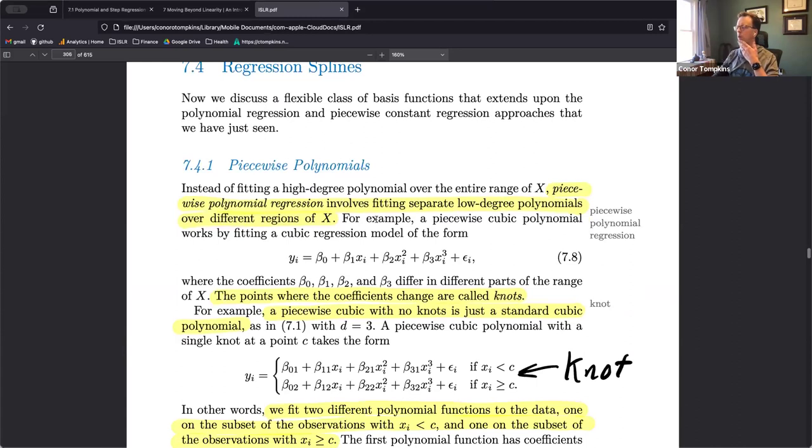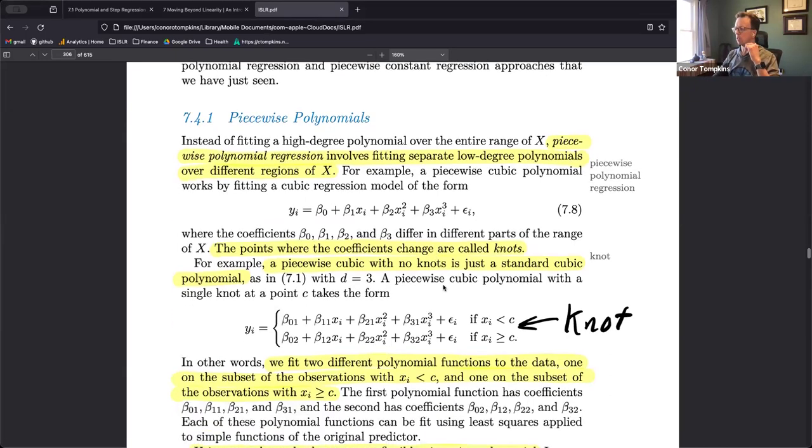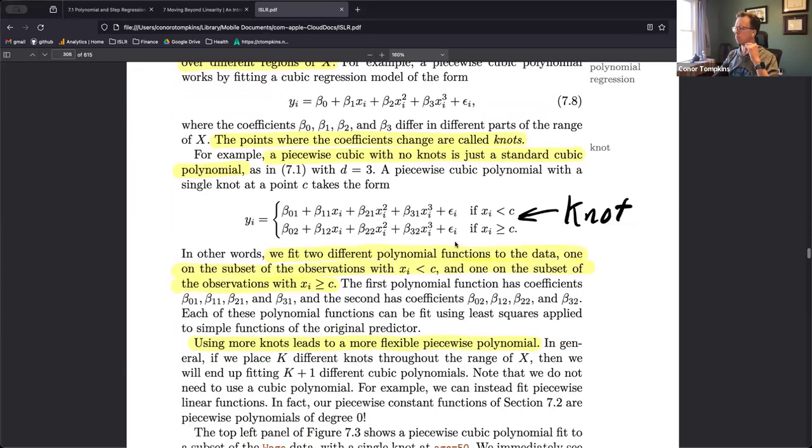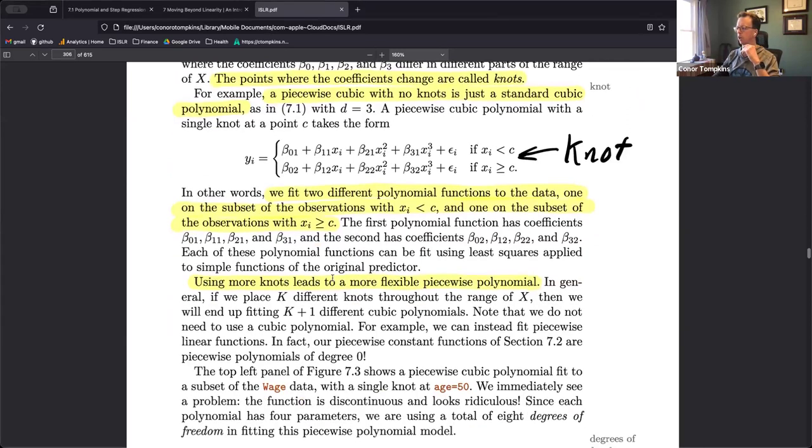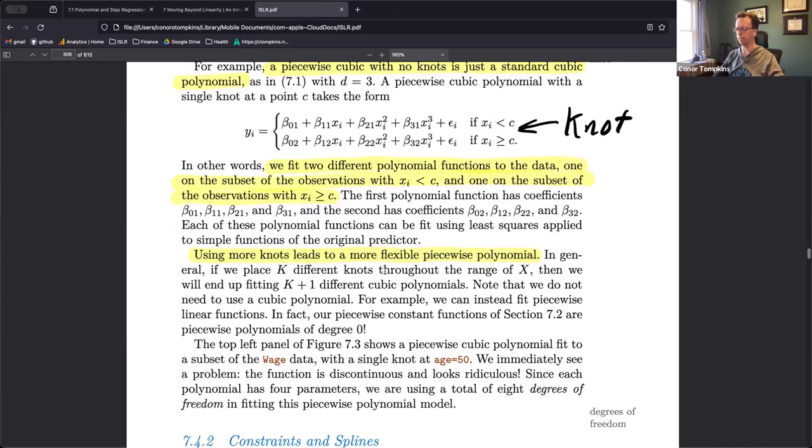So regression splines, fitting separate polynomials over different regions. Those regions are defined by knots, aka those cut points that we saw in the stepwise section. Knots are a way to change the degrees of freedom of the model. More knots means that the function is more adaptable to the data, which can be good or bad.